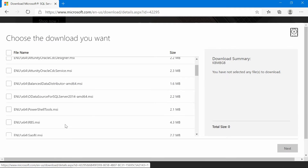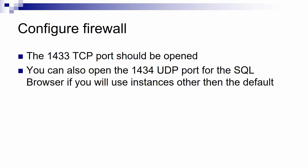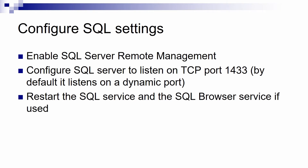To download these two files, click on download and find them in the x64 folder. We also have to configure the firewall — we have to open port 1433 TCP. In case we use the SQL Browser, which applies if you don't want to use the default instance name, then you also have to open port 1434. Before testing, we need to enable SQL remote management, configure SQL Server to listen on port 1433 (because by default it listens on a dynamic port), then restart the SQL service and the SQL Browser service.